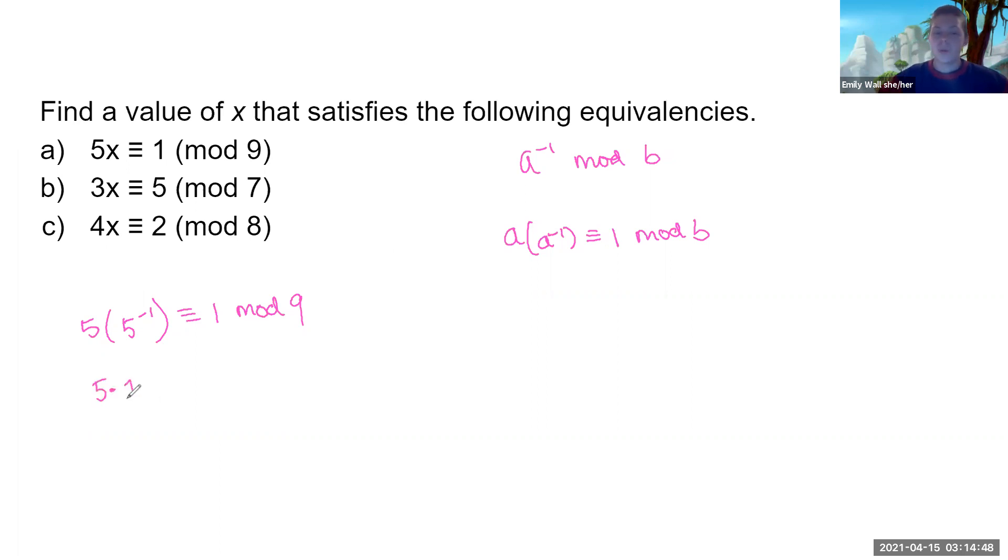So I usually start at 1 and see, okay, could 1 be 5's inverse? Well, let's see. 5 times 1 equals 5. That is equivalent to 5 mod 9. Okay, 1's a no-go. Let's try 2. 5 times 2 equals 10. Oh, hey, that's equivalent to 1 mod 9. Wow, we're done. The inverse of 5 is 2.